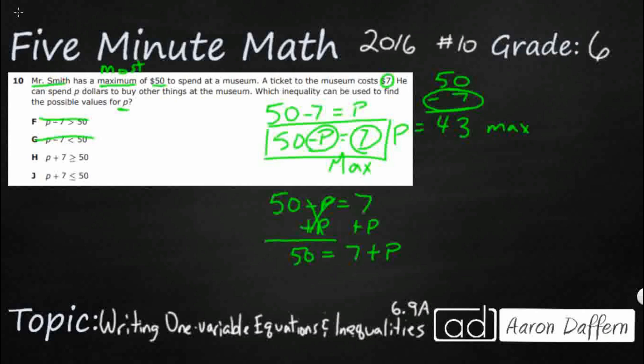That makes sense, right? Because we want to add this P is his extra money. So his extra money, right, plus the $7 to get in is going to be no more than 50.